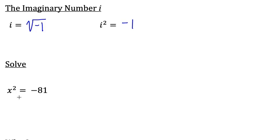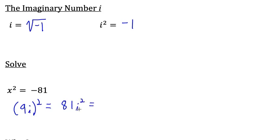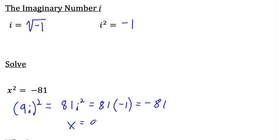So let's see how that will help us with the equation x² = -81. We're trying to think of some number that when you multiply it by itself equals negative 81. Let's try multiplying the number 9i by itself. When we square 9i, we have 9 times 9, which is 81, and i times i, which is i². Now i² is defined to be negative 1, so this really equals 81 times negative 1, which equals negative 81. So we just figured out that (9i)² equals negative 81. So we solved the equation: x equals 9i, because when we squared 9i, we got negative 81.